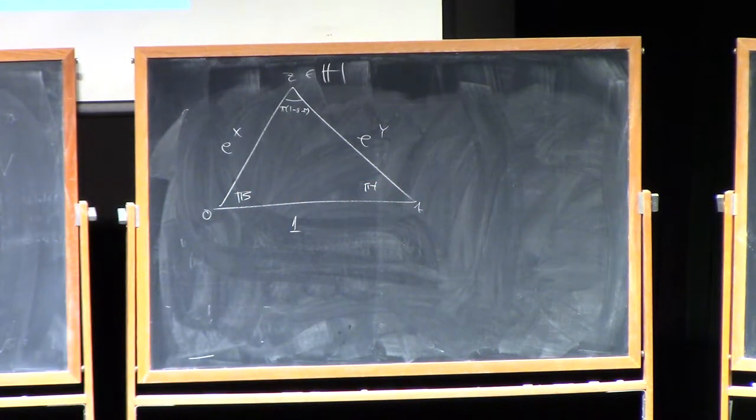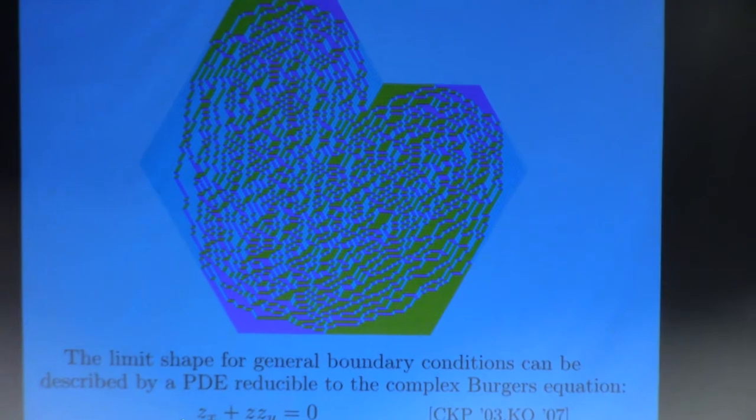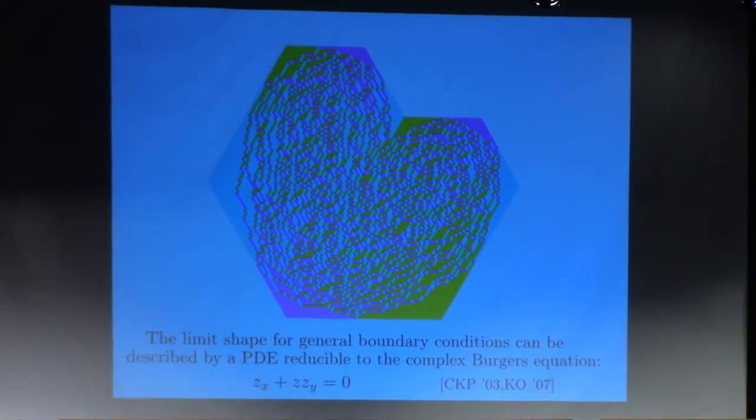And if you write the, it turns out, if you write the PDE in terms of that function Z, you, that it becomes, well, okay, maybe I'm hiding something a little bit under the rug here, but it becomes this nice, very simple PDE, the complex burgers equation. The X derivative of Z plus Z times the Y derivative of Z equals zero, where X and Y are the coordinates in the plane. Well, tilted coordinates in the plane here.